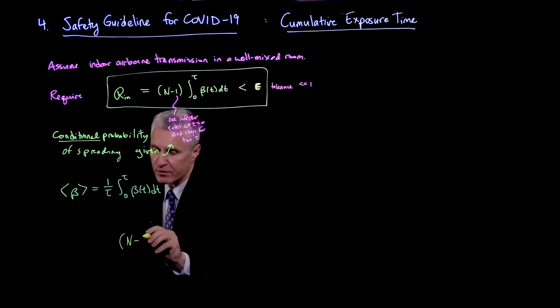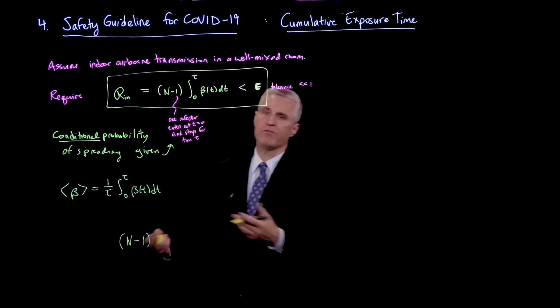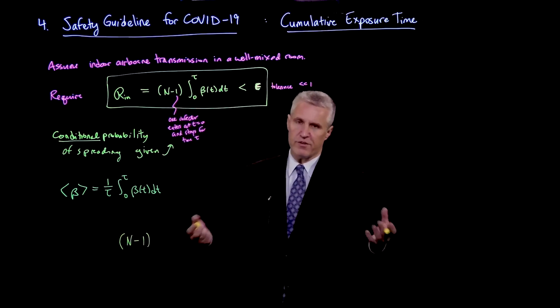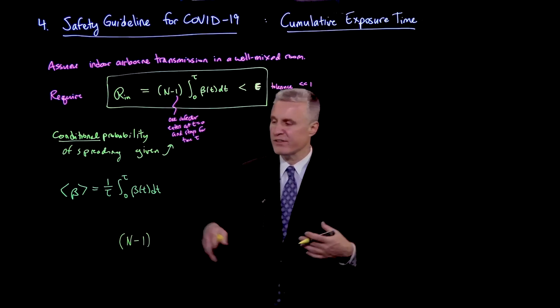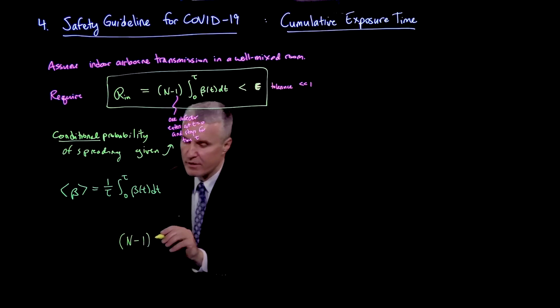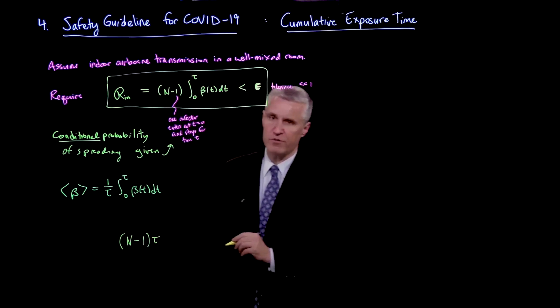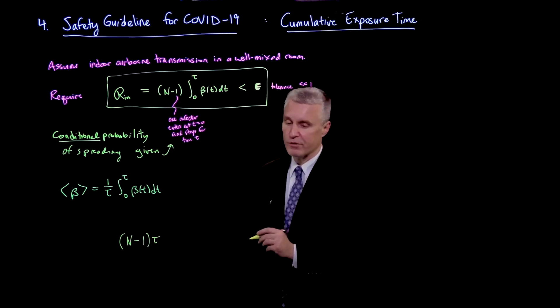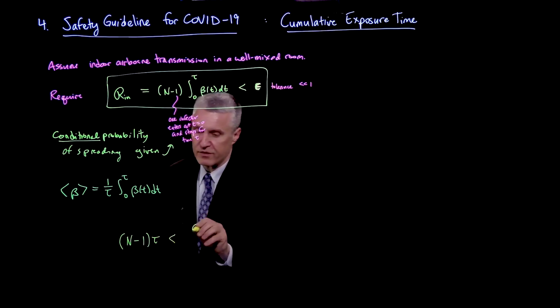And so if I put the beta bracket on the other side, I arrive at a very fundamental result, which is that the number of susceptibles in the room, which is roughly the occupancy, although if you're at a very low occupancy, it's everybody but the infected person. So it's n minus 1 times the typical time spent in the room by the infected person is less than the tolerance divided by the average transmission rate.